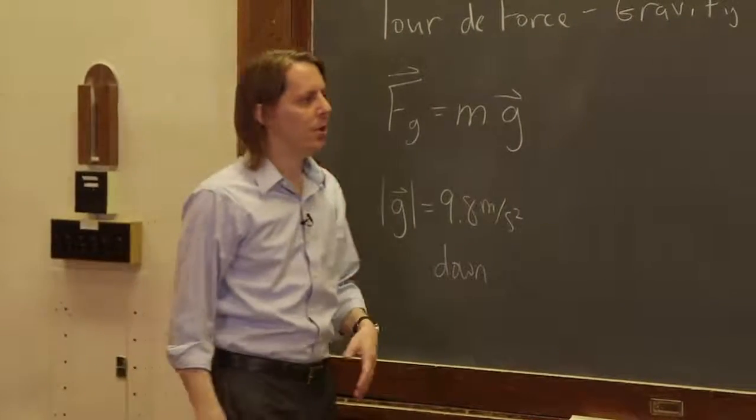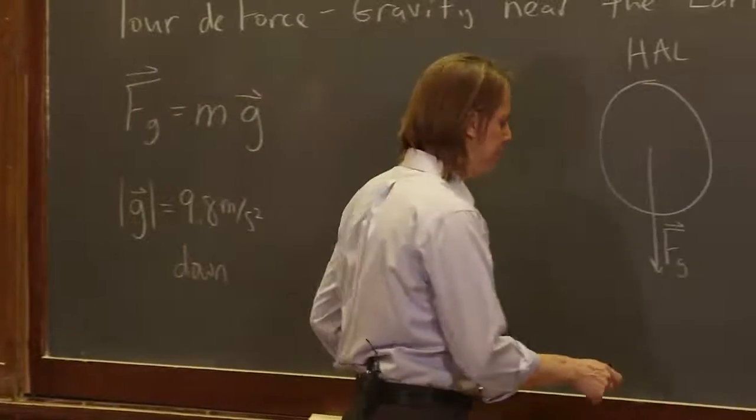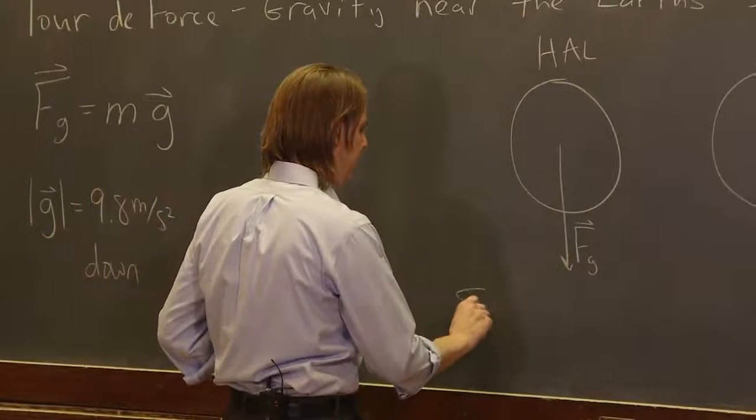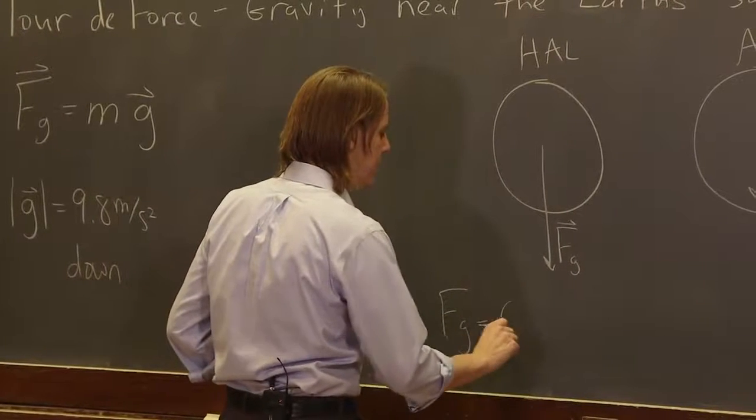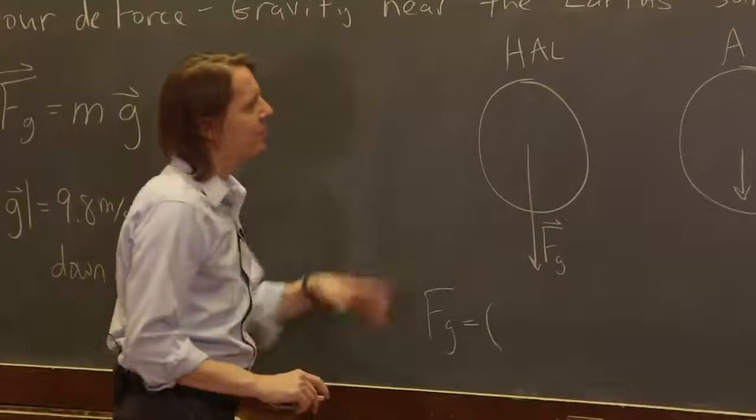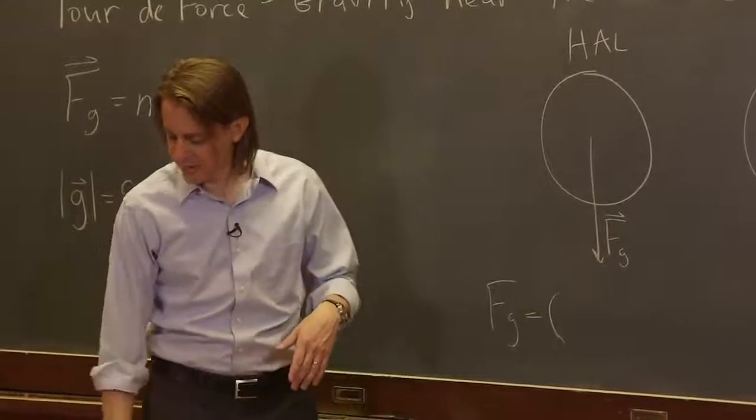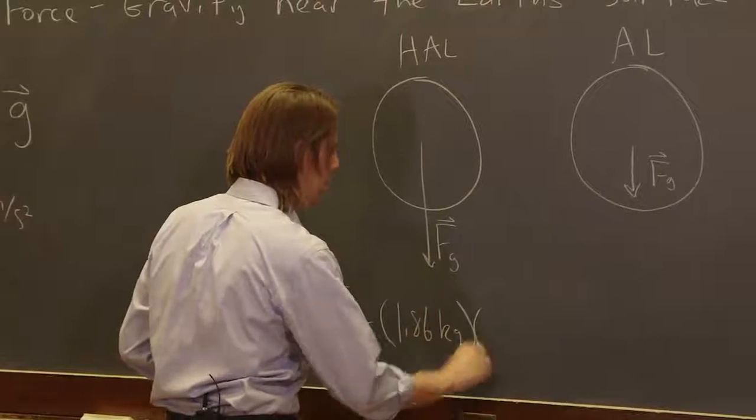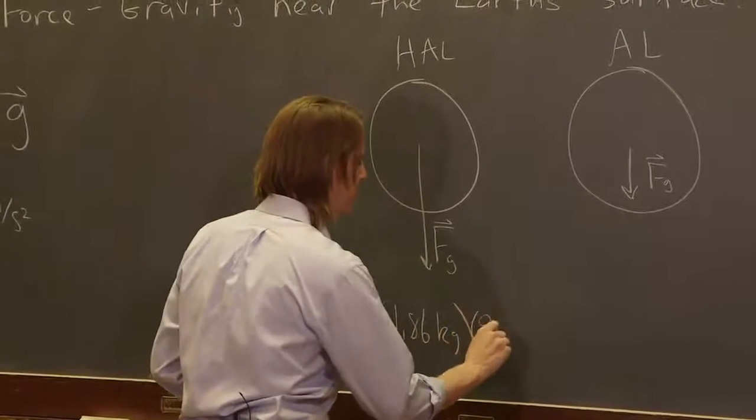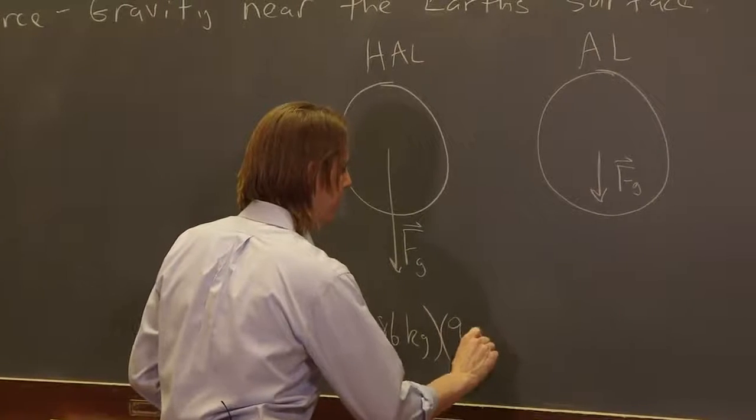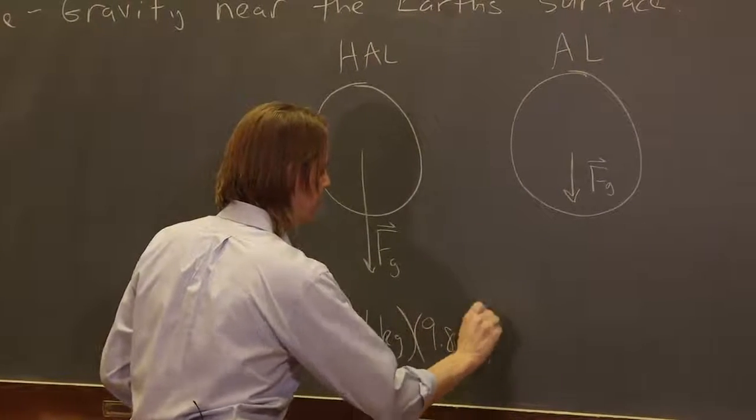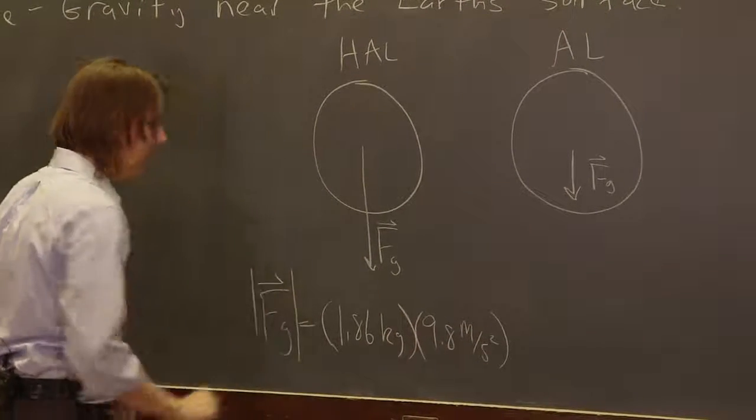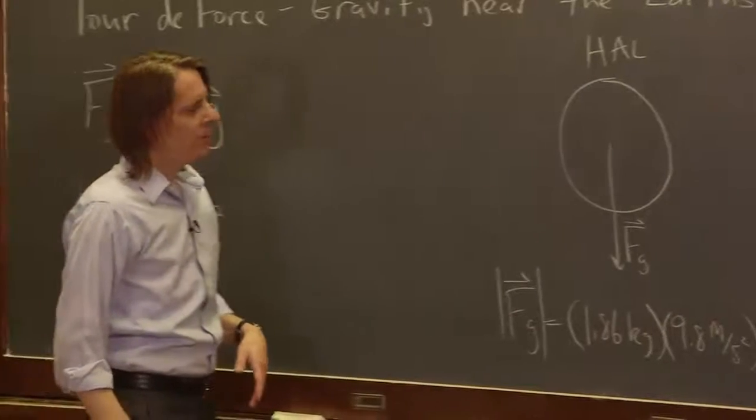So Fg here is m, the mass of Hal. It's a pretty big piece of steel, 1.86 kilograms, times 9.8 meters per second squared. And we mean the magnitude of Fg.